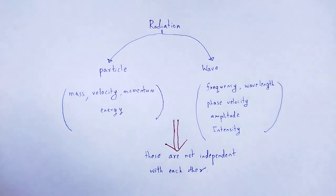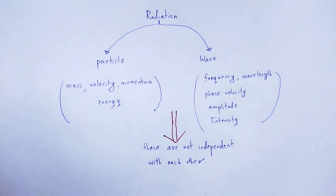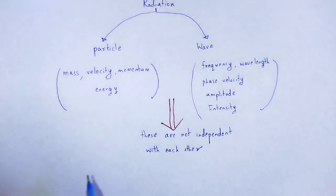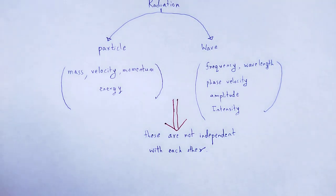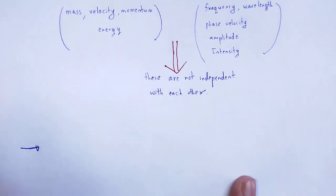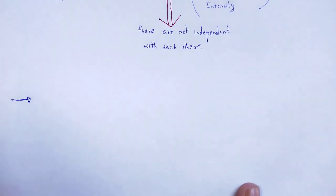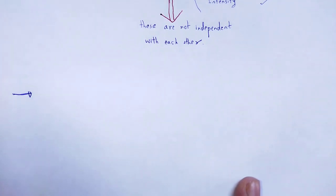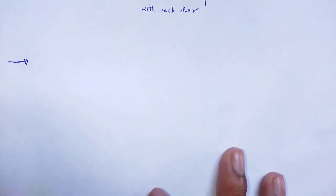Therefore it is difficult to accept that radiation has dual nature. How do we physically notice that difficulty? There are so many experiments and observations noted from these experiments that finally conclude the dual nature of radiation.